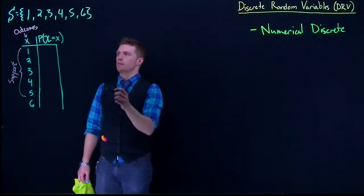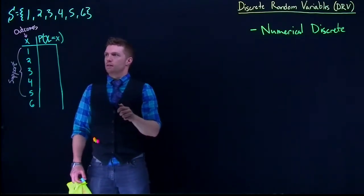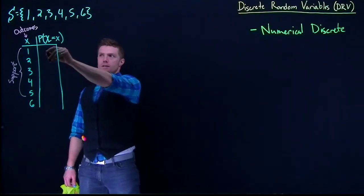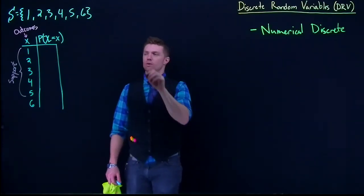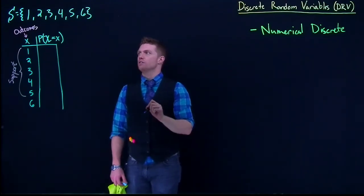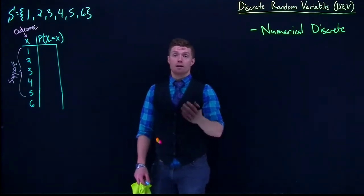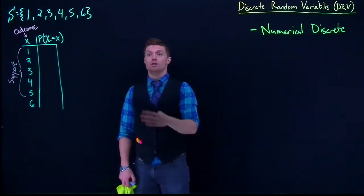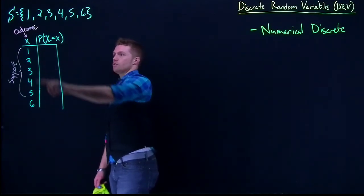Let me try to explain this again. This little equation, this probability statement, is saying, what is the probability that this capital X, the random event, is going to equal any specific possible outcome, or the X's?